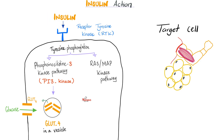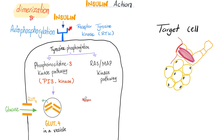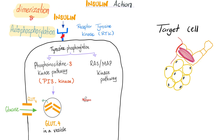Insulin has to bind to its receptor — the receptor called receptor tyrosine kinase. It has a very good property called autophosphorylation; it doesn't need help from anybody — it phosphorylates itself. It's strong and independent, self-sufficient — such is the life of the insulin receptor tyrosine kinase.